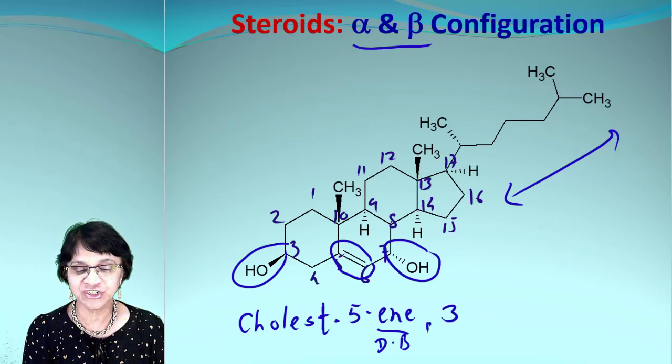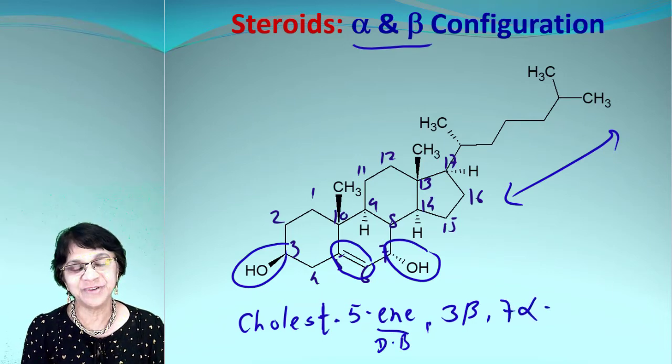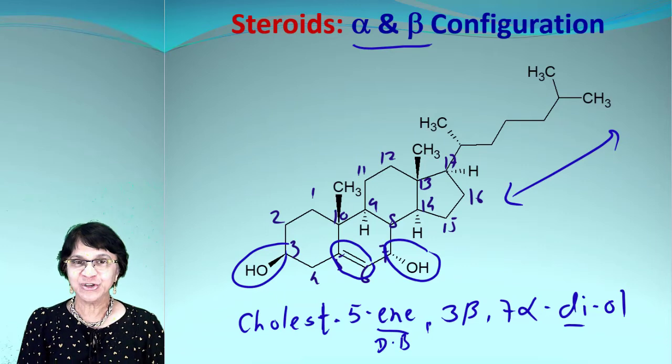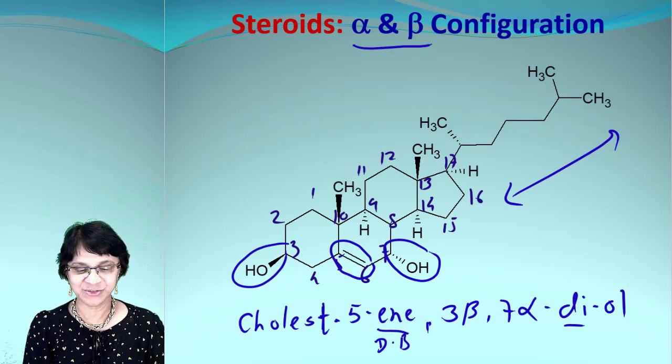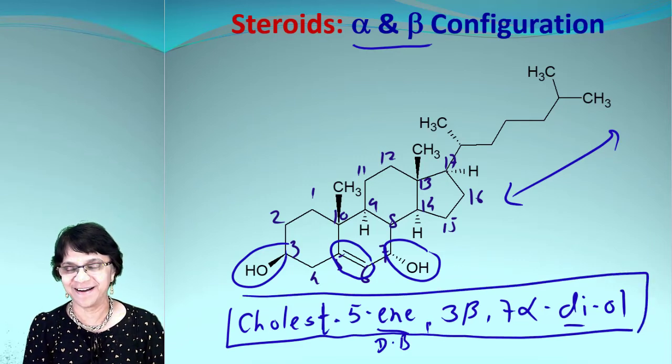Then we also got two OH groups—hydroxyl groups, or we call them as alcohol groups. Which positions are those? Three and seven. Look at the orientation: three is a beta one, so I can say 3-beta, and for seven it is alpha. And then we can say that is two groups, so 'di,' and it is alcohol, so 'diol.' So there you go, you got the name of the compound, which is cholest-5-en-3β,7α-diol.